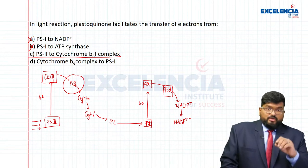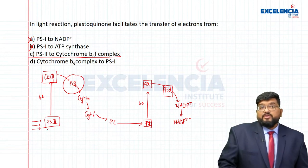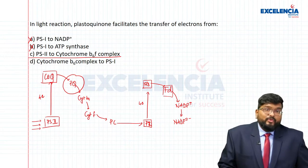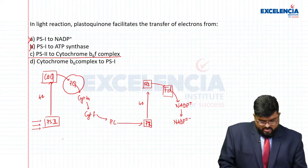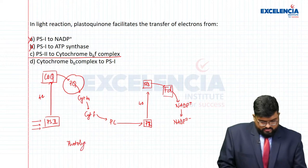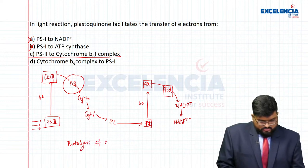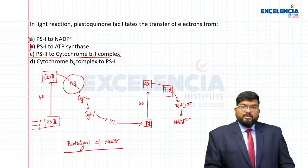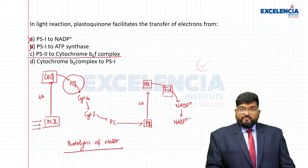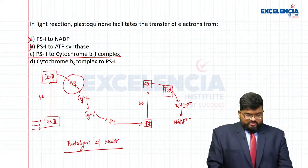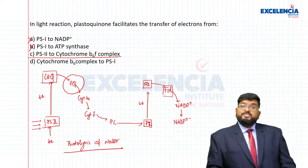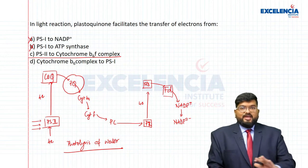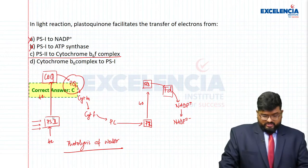PS2 is also at a loss of four electrons — so who replenishes those electrons? Because of photolysis of water, PS2's electrons are replenished and the cycle is completed.